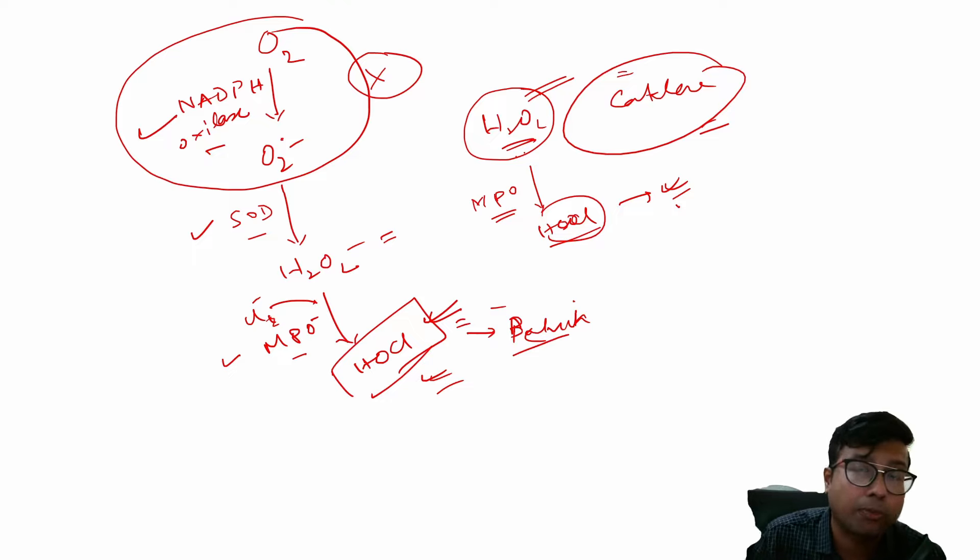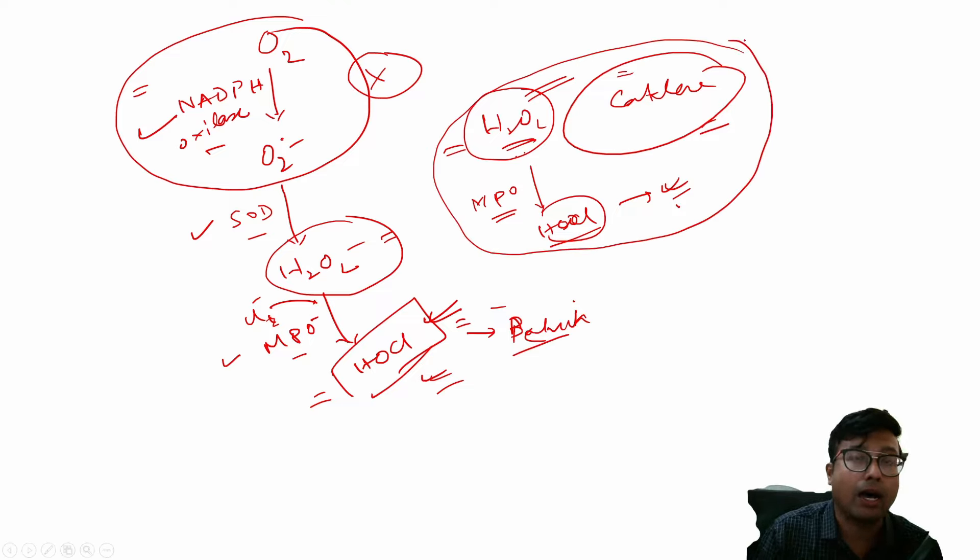Therefore, when the catalase positive organism infects a patient who has got NADPH oxidase deficiency, there is no H2O2 from the host source, neither is there any H2O2 from the bacterial source. Therefore, there is no production of HOCl and only catalase positive organisms are prone to infect these patients.